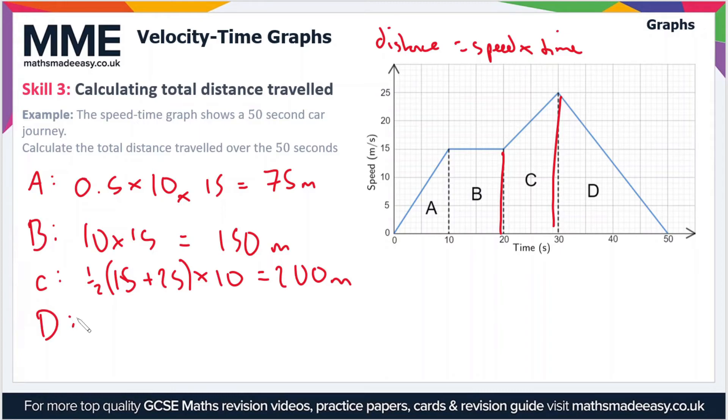Finally, in section D, we have another triangle. So once again it's a half base times height. It's 0.5 times the base, which is 20 seconds in this case, times the height, which is 25. That gives us 250 meters.